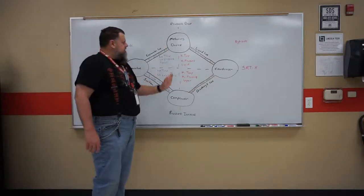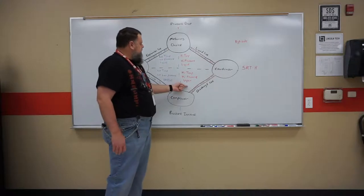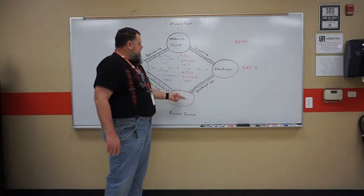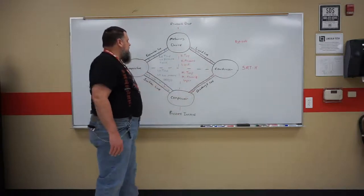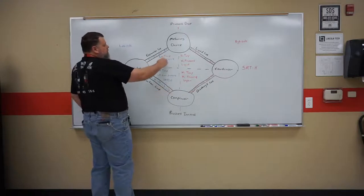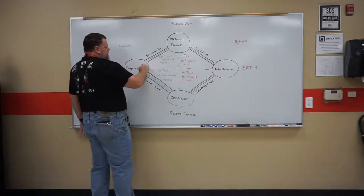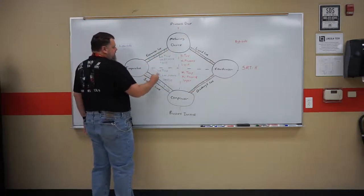Also, we have four basic sections in here. We have high temp, high pressure vapor in this part between the compressor and the condenser. We have high temp, high pressure liquid between the condenser and the metering device. We have low temp, low pressure liquid going into the evaporator, and we have low temp, low pressure vapor going back into the compressor.